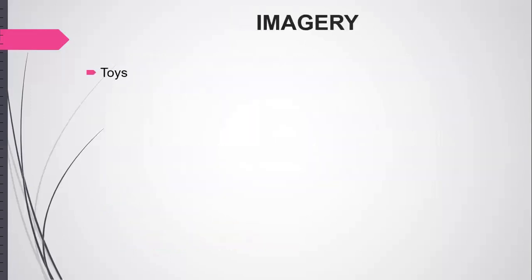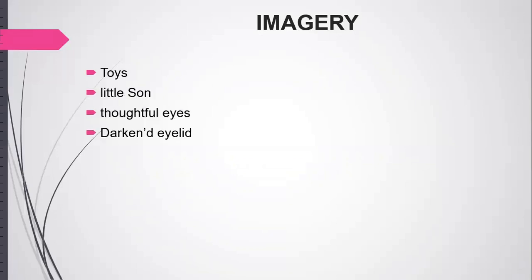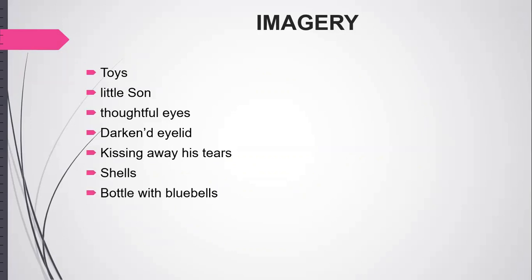Imagery: without imagery nothing is possible, because imagery relates to images — maybe mental images or other types. Imageries are of five types, corresponding to our five senses. In this poem 'The Toys,' it is full of imageries: 'little son,' 'thoughtful eyes,' 'darkened isle,' 'kissing away his tears,' 'shells,' 'bottle with blue bells.' These are all examples of imagery. Today we have basically discussed different figures of speech or poetic devices used in the poem 'The Toys.' Thank you.